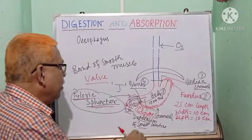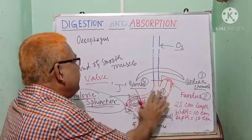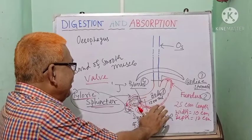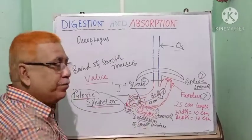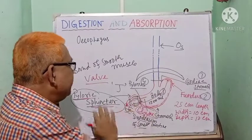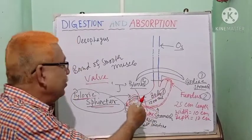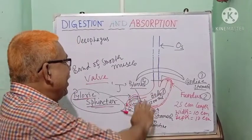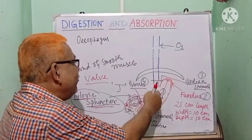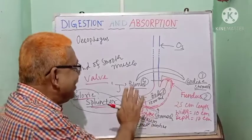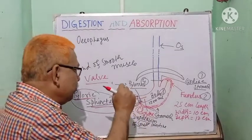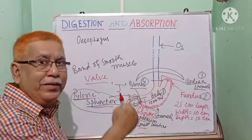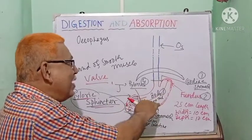Now, what is the function of the stomach? Digestion takes place in the stomach. Mainly protein is digested here with the help of digestive enzymes. A small portion of lipid is also digested here.